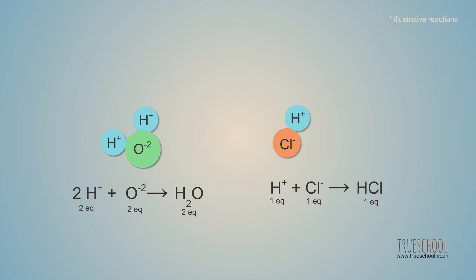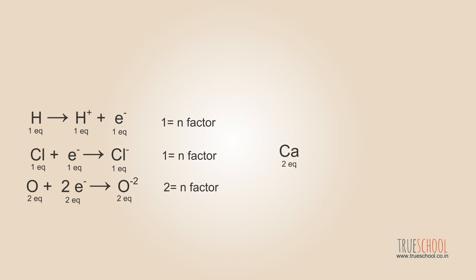Hence we say oxygen is two times equivalent of chlorine. Using this basic concept, we will define a new term called n-factor which measures a species' capability to release or accept electrons. Hence n-factor of H is 1, Cl is 1 and O is 2. If we take example of Ca, its one mole can release two moles of electron. Hence, its n-factor will be two and one mole of Ca will be two equivalents.